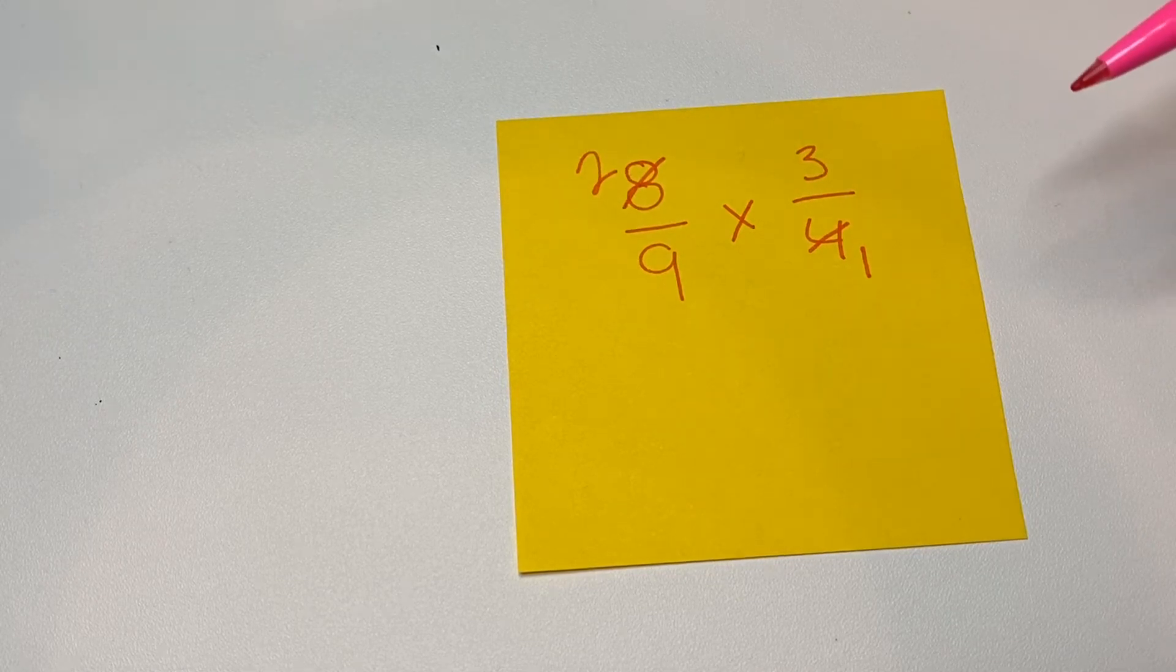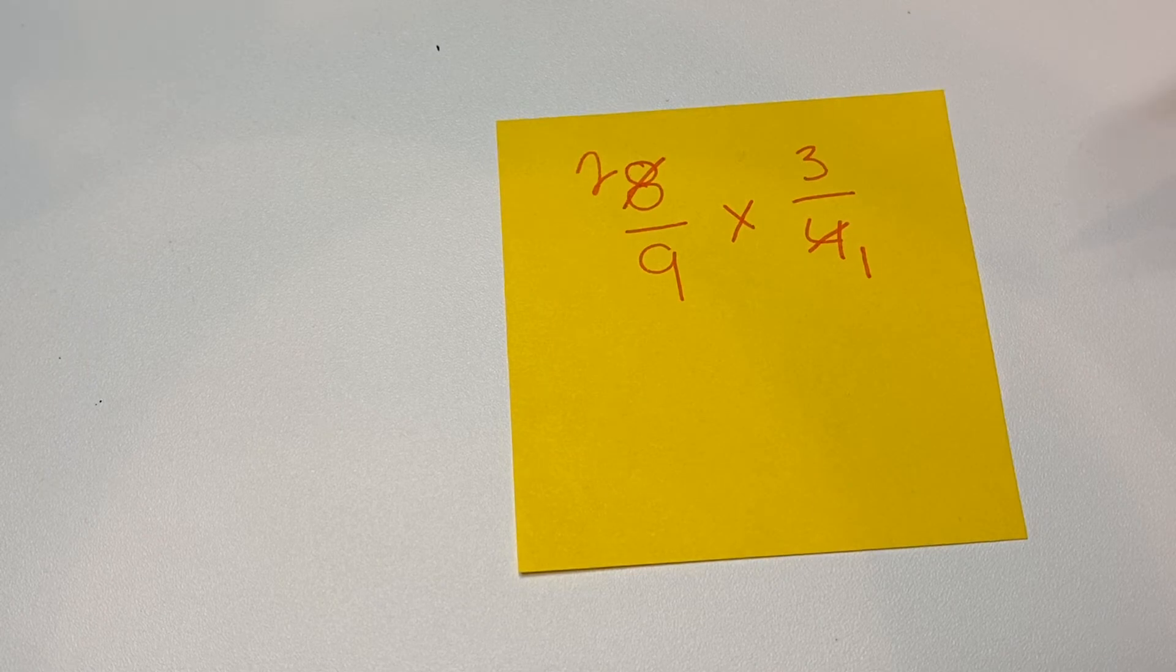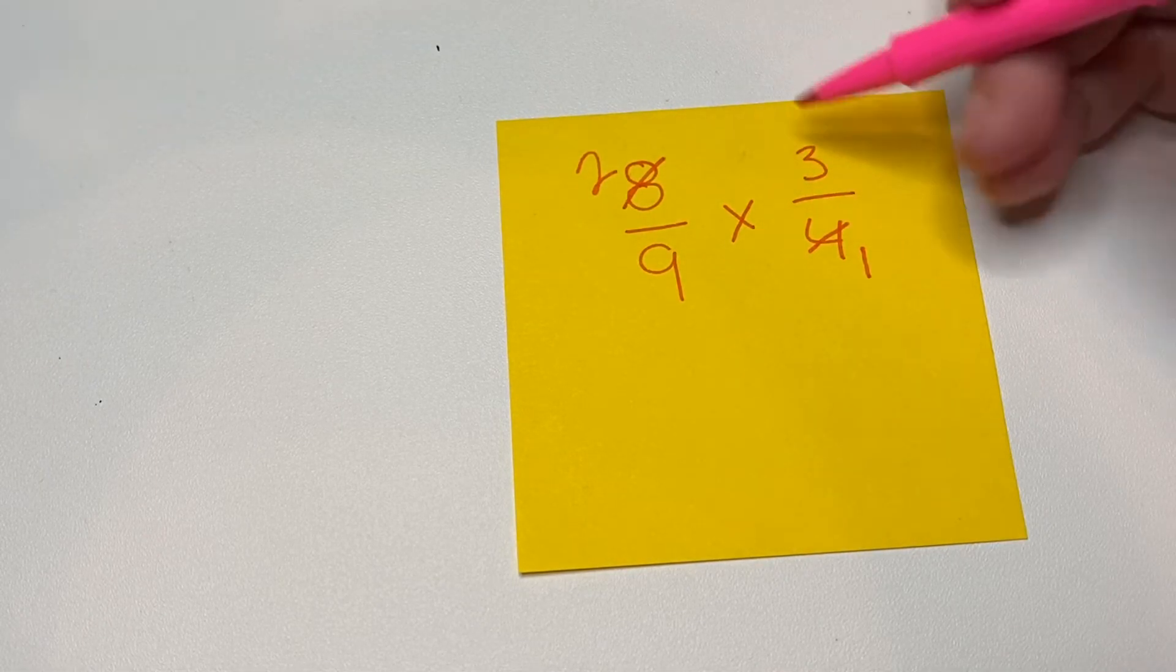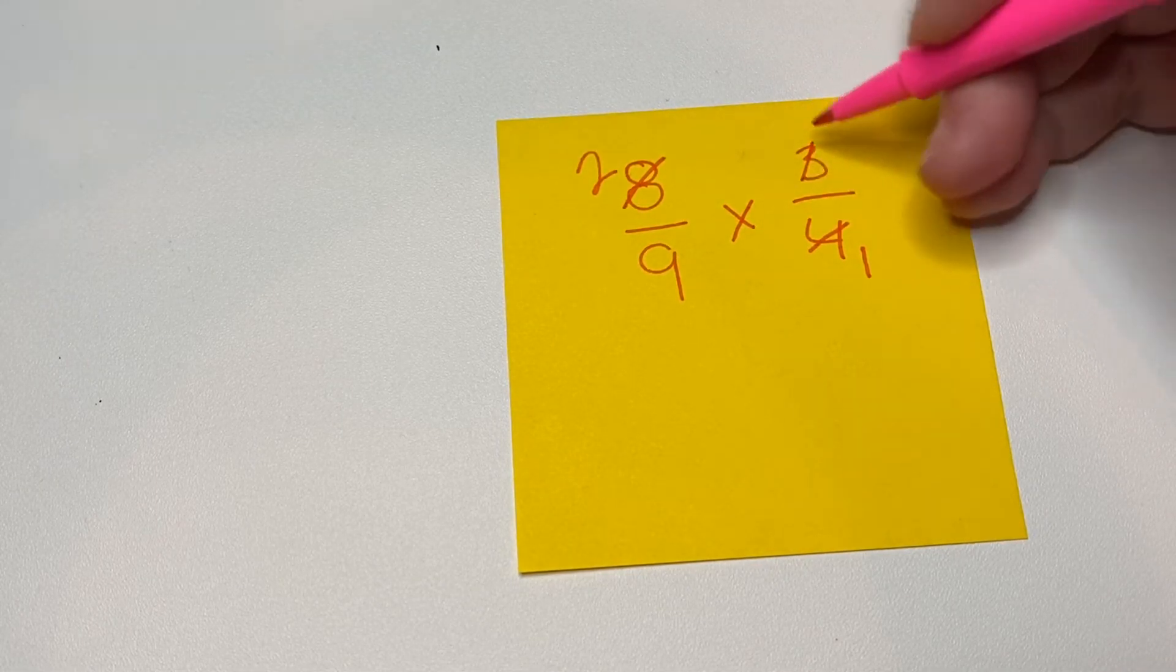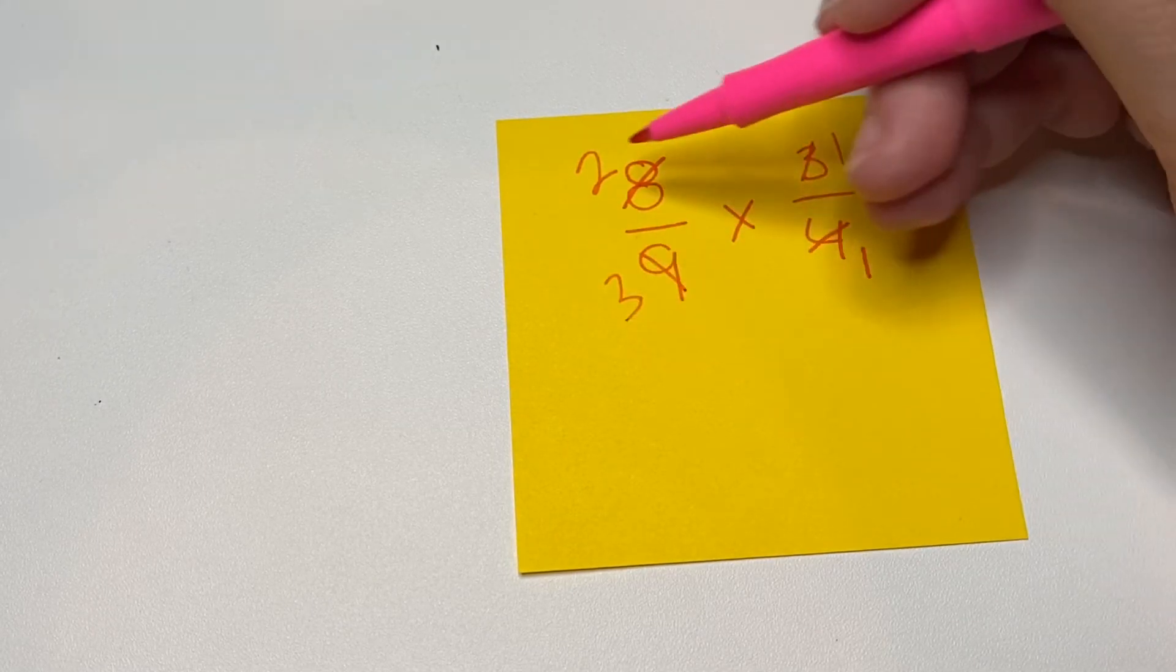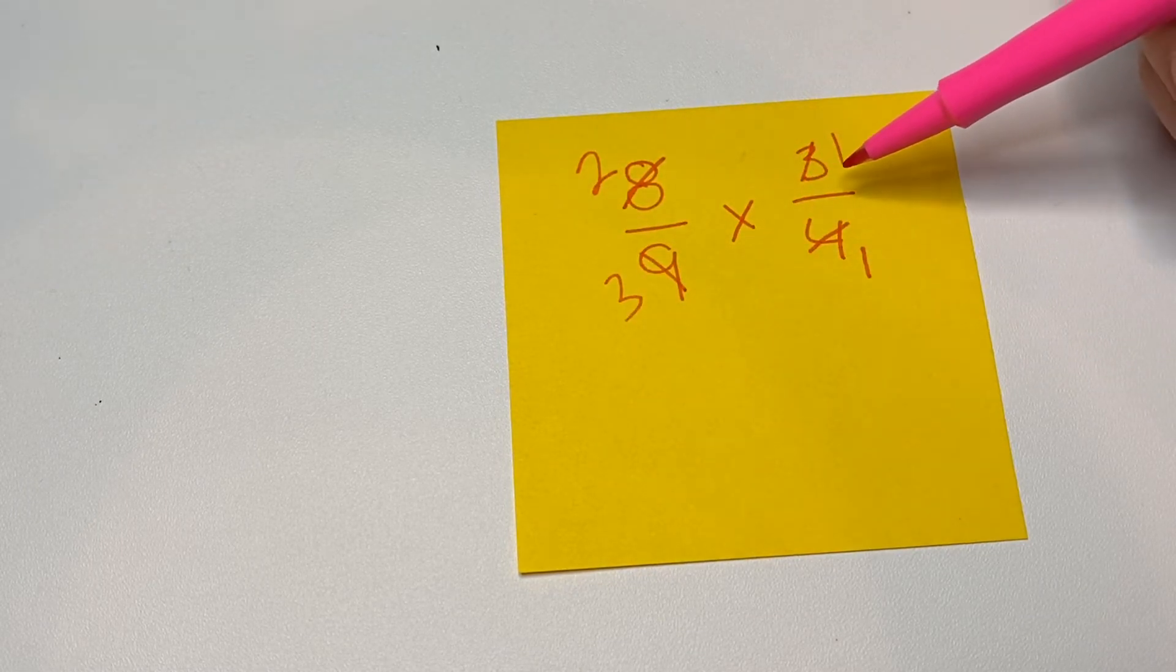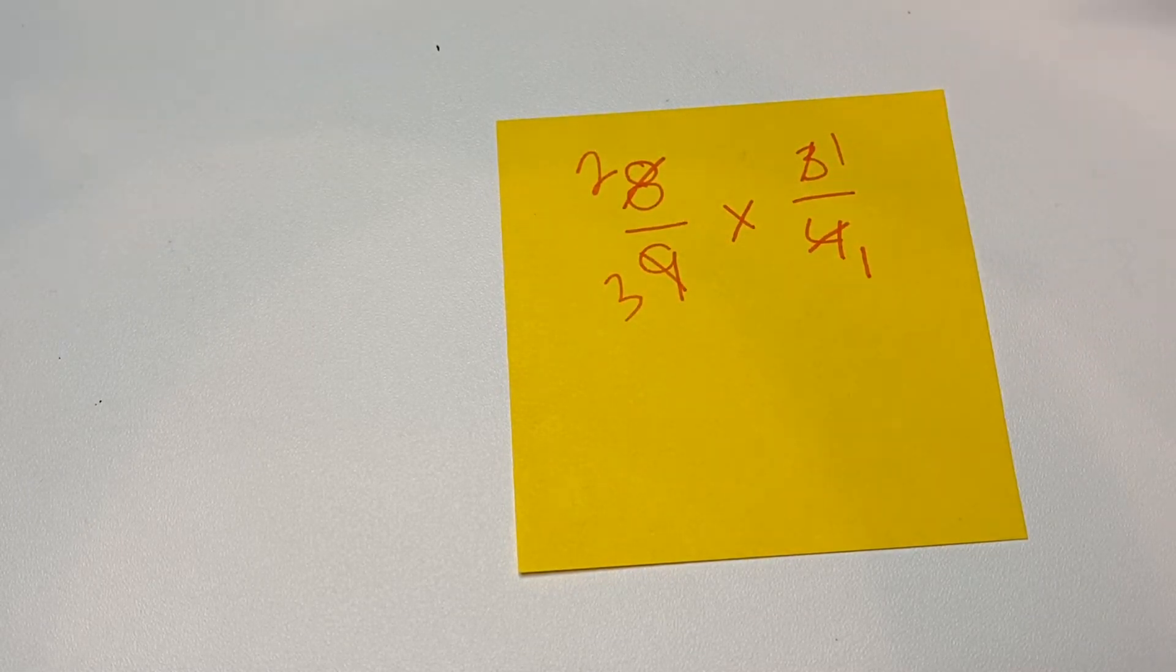Now let's look at the other numerator and denominator. Do they share a common factor? They do. It's three. So three goes into both of them. Three goes into three one time. And three goes into nine three times. So now we're going to do two thirds times one over one, which is one.